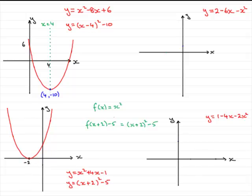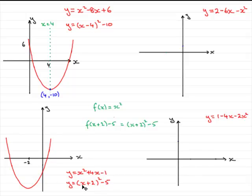Rather than randomly sketching, we need to know where the graph crosses the y-axis. Substituting x equals 0 into x squared plus 4x minus 1 gives minus 1. Checking with the completed square form: 0 plus 2 is 2, squared is 4, minus 5 gives minus 1. So the graph crosses the y-axis at minus 1. The minimum point is at minus 2 across and minus 5 down, so the minimum point is (−2, −5).